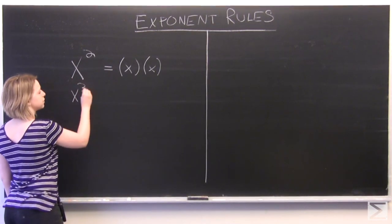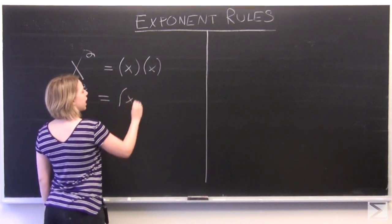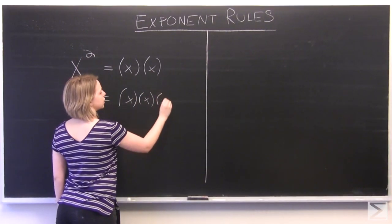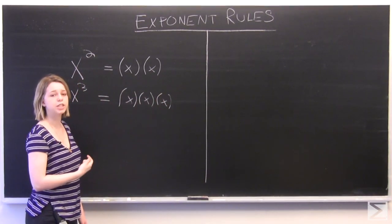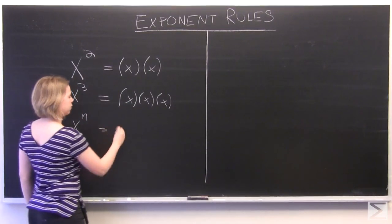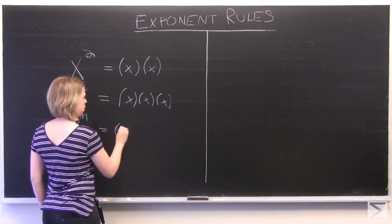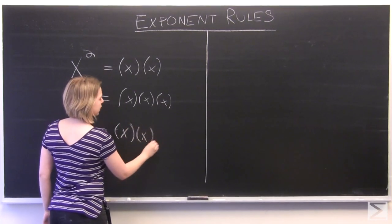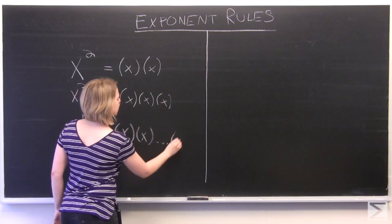If we had x cubed, it would be x times x times x for three iterations. So if we took x to the nth power, it would be x times x times x for n iterations.